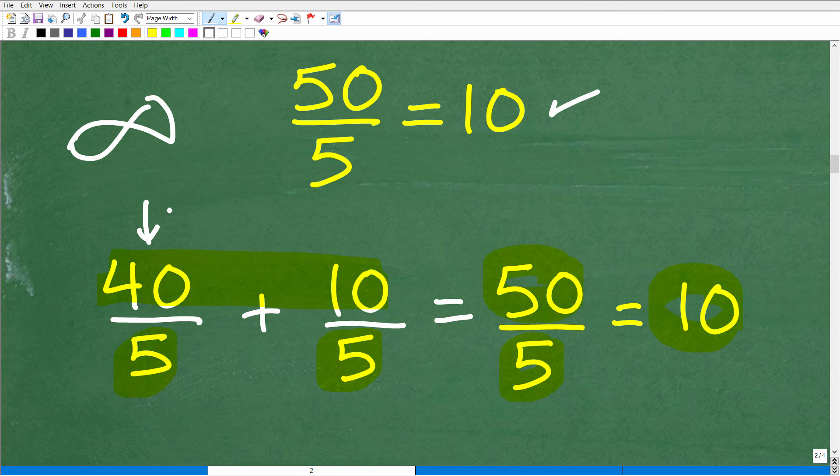So 40 over 5 plus 10 over 5. Now, a lot of you are saying, well, isn't this just the number 8 and this is just the number 2? Yes, it is. But you can express these numbers as fractions. And sometimes you need to do that.